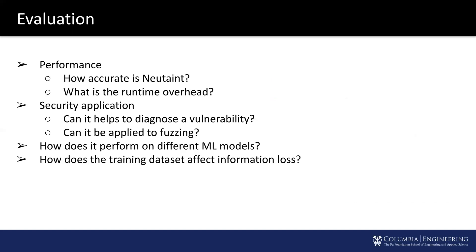Next, we will cover our evaluation for NeuTaint. Our evaluation has four parts. We first evaluate the performance of NeuTaint: how accurate is it and what is the runtime overhead? Then we evaluate security applications: can it help diagnose a vulnerability, and can it be applied to fuzzing? Finally, we measure the performance of NeuTaint on different machine learning models and the effect of the training dataset on information loss.